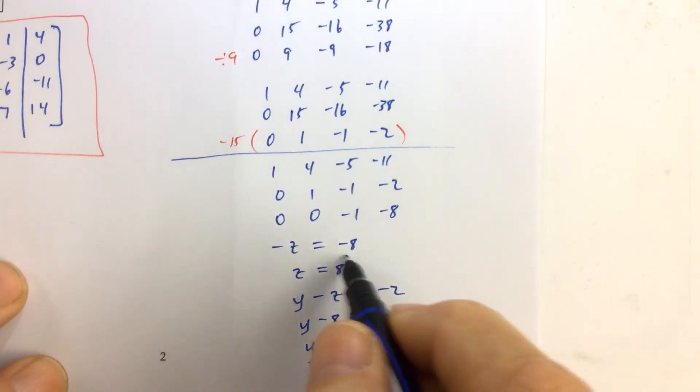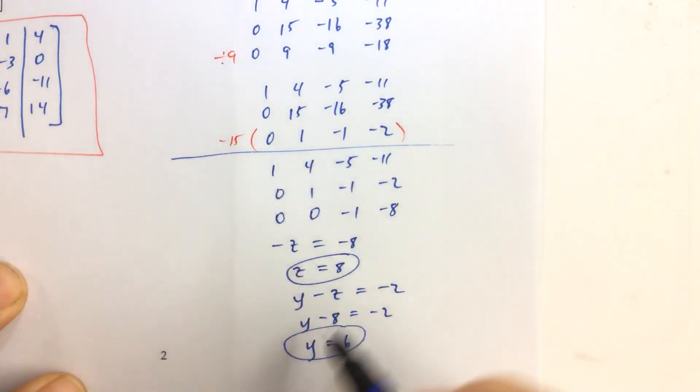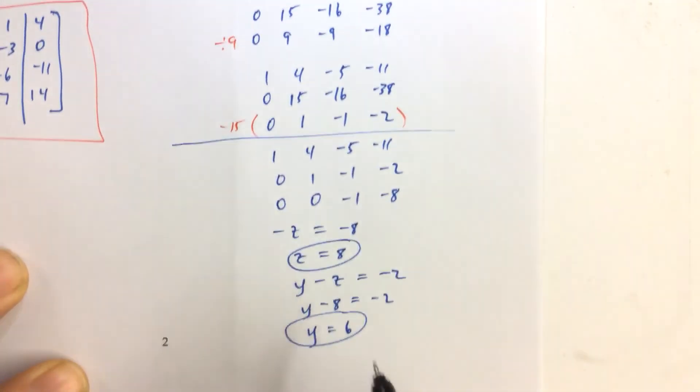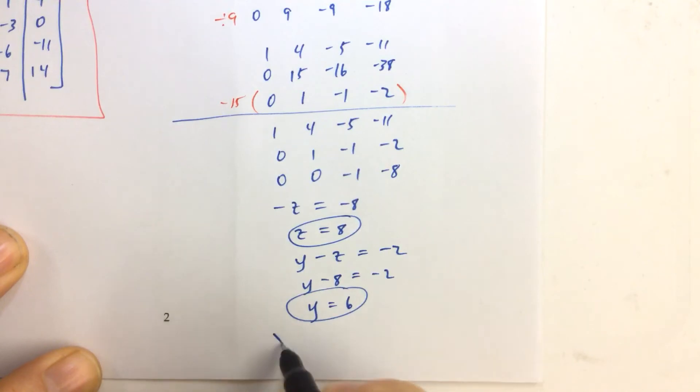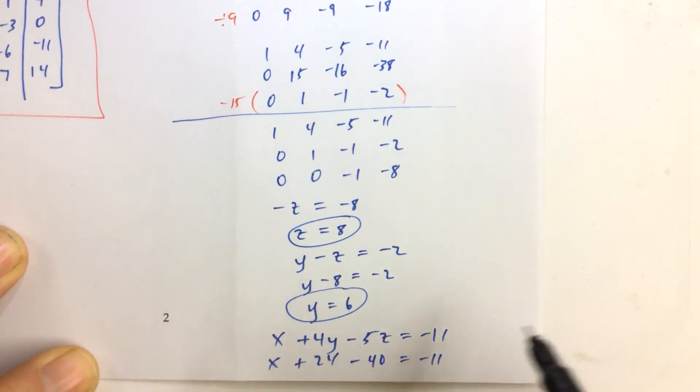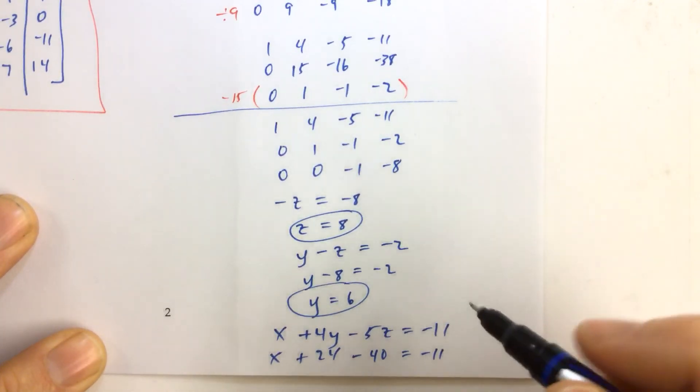So we've got our z, we've got our y, and then we replace both y and z in the first equation. And we get x plus four y minus five z equals negative eleven. X plus four times six is twenty-four. Minus five times eight is forty, equals negative eleven. And I ran out of room on my paper, but we're almost done.